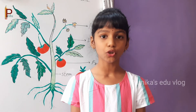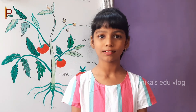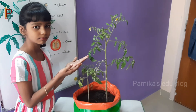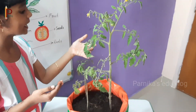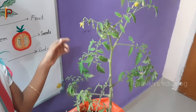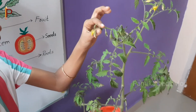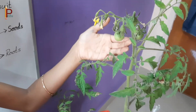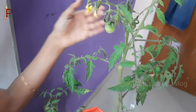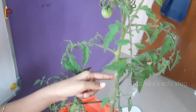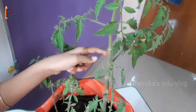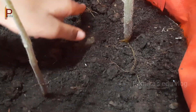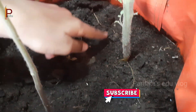Now I will show you a real plant. This is a plant. Here are the leaves, flower, fruit, and stem. Look at here — the roots are here.